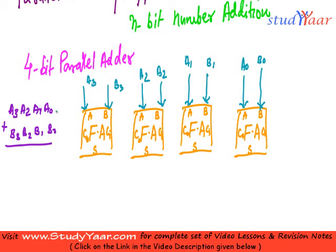Initially, since I do not have an input carry, I am going to give a 0 to the first carry-in. The carry output of the first full adder becomes the carry input of the second full adder, and similarly the output of the second is the input of the third full adder.